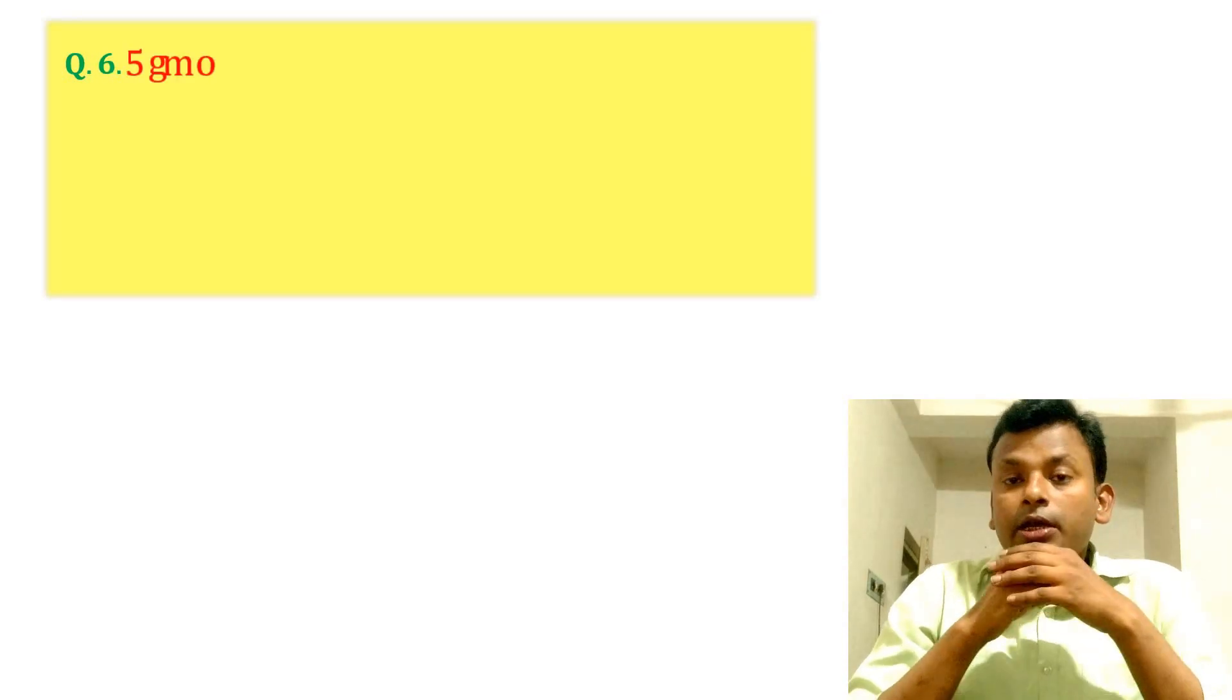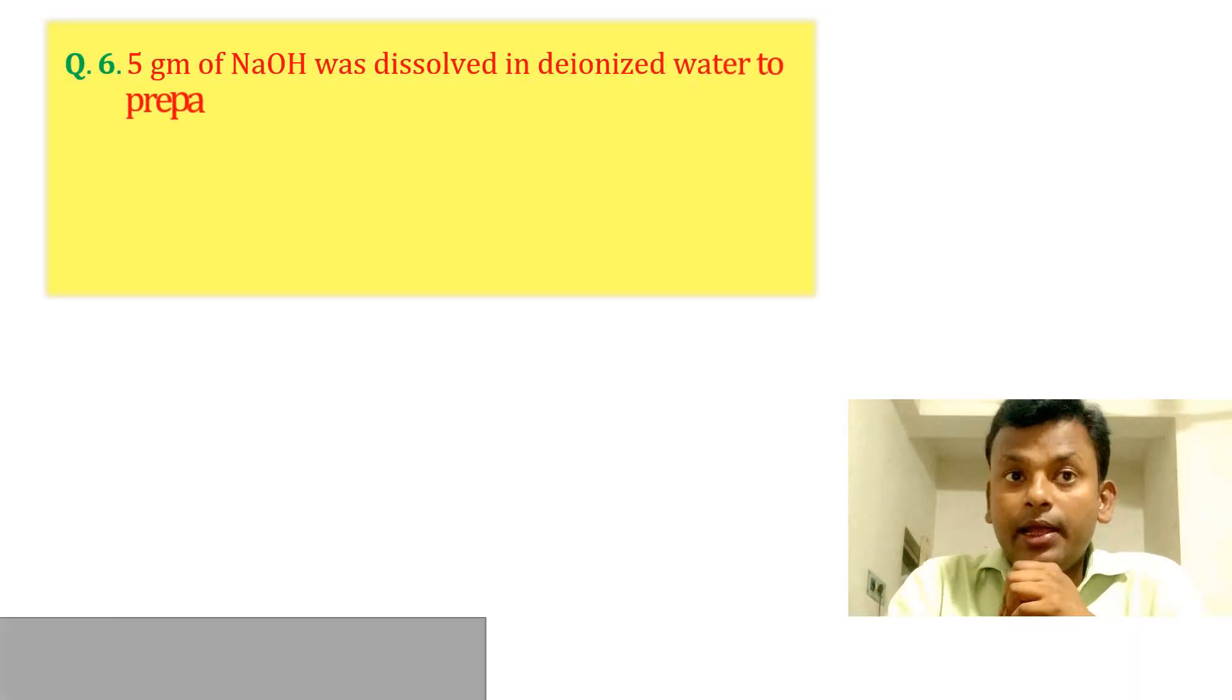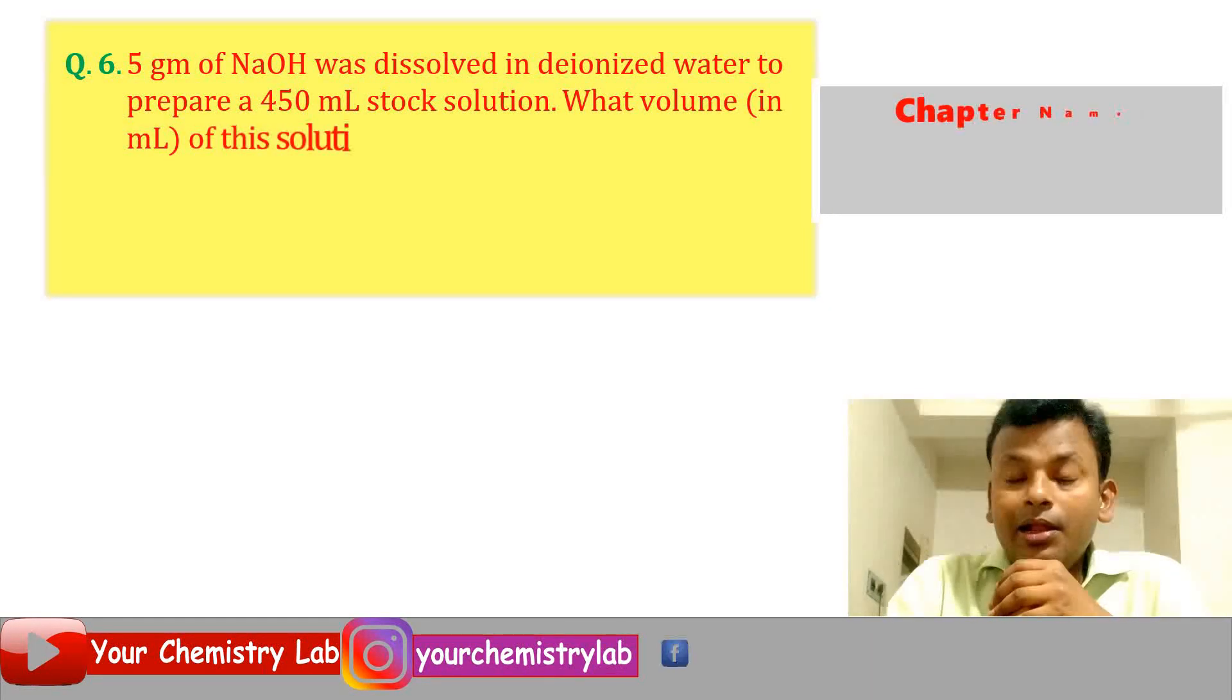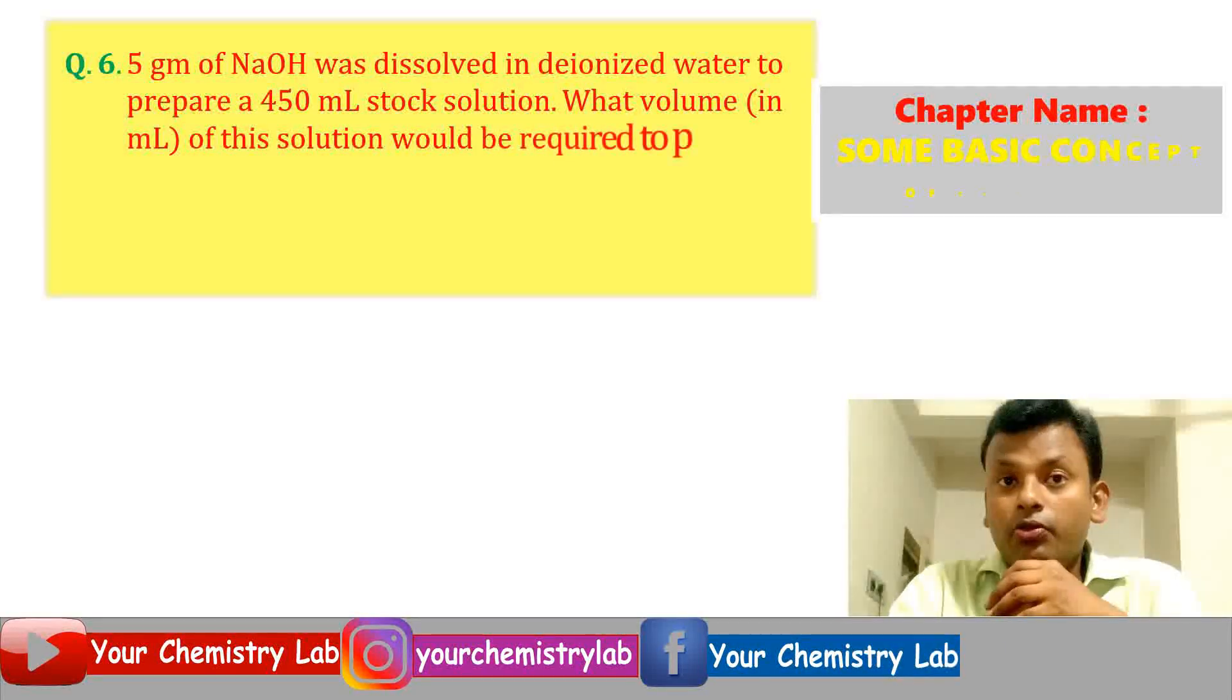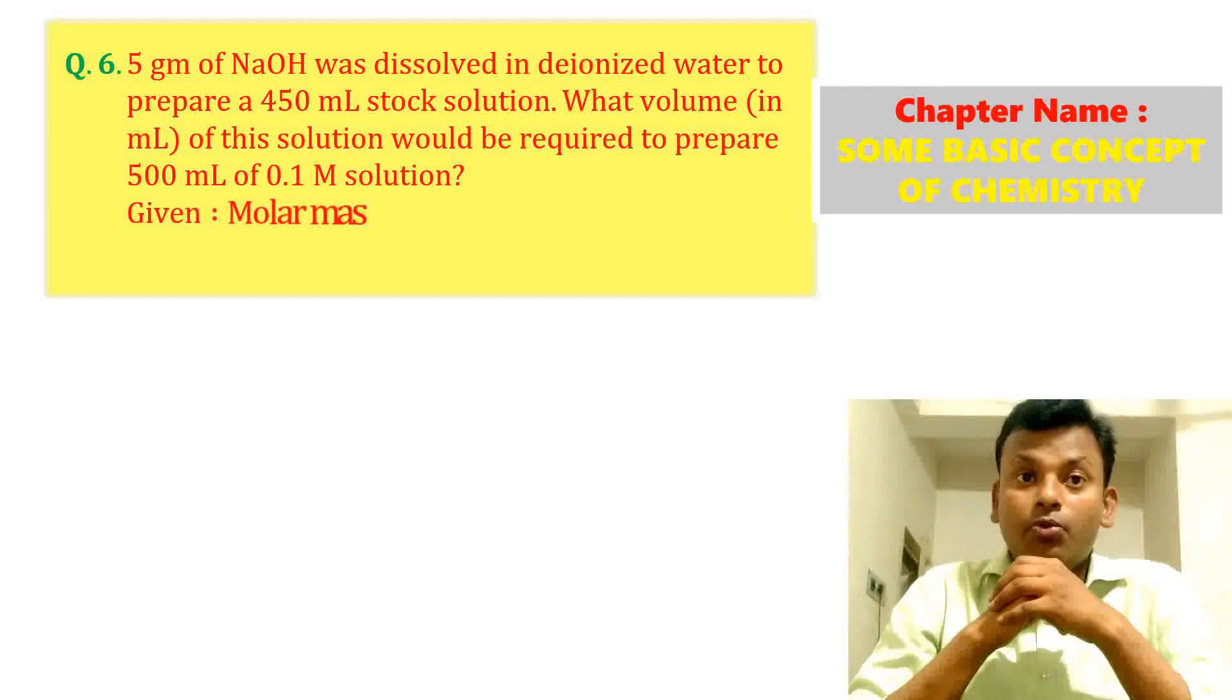Question 6: 5 grams of NaOH was dissolved in deionized water to prepare a 450 ml stock solution. What volume in ml of this solution would be required to prepare 500 ml of 0.01 molar solution?